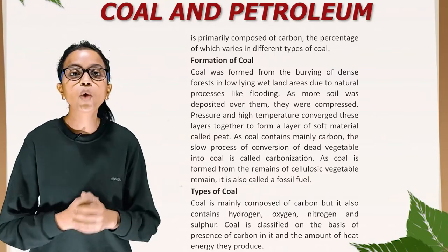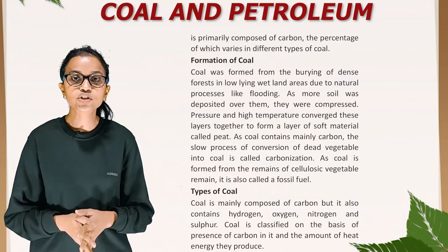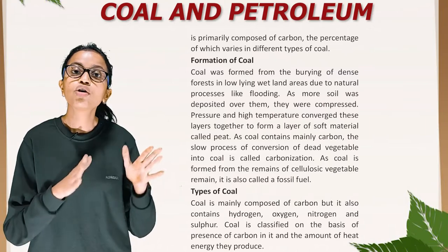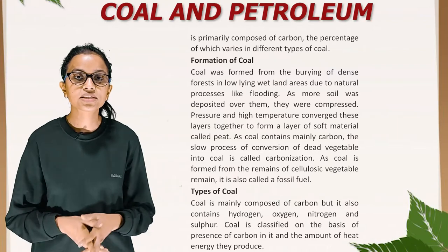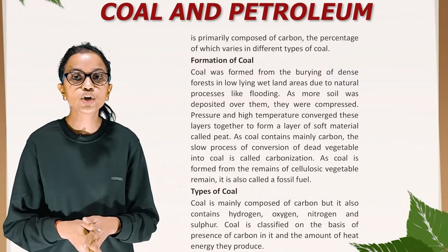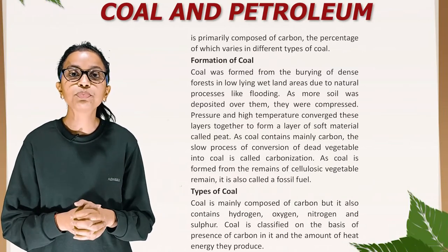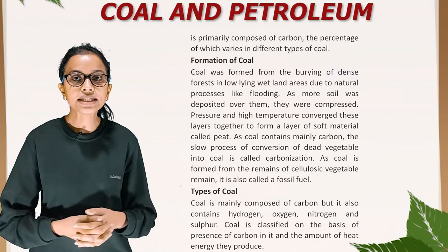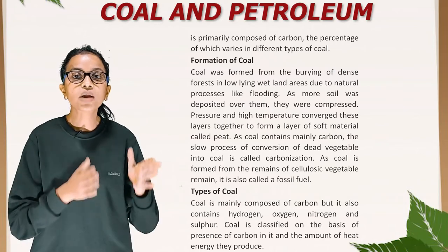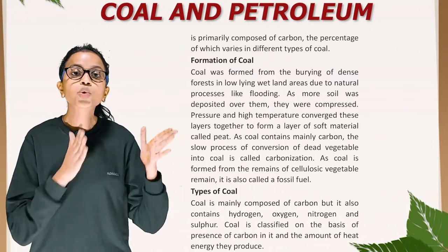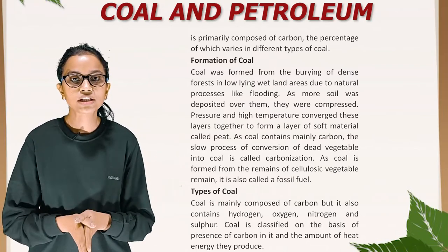Formation of coal: Coal was formed from the burying of dense forests in low-lying wet land areas due to natural processes like flooding. As more soil was deposited over them, they were compressed. Pressure and high temperature converted these layers together to form a layer of soft material called peat. As coal contains mainly carbon, the slow process of conversion of dead vegetation into coal is called carbonisation. As coal is formed from the remains of cellulosic vegetable remains, it is also called a fossil fuel.